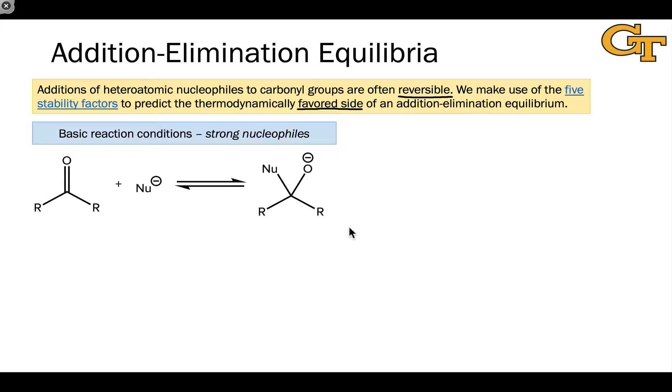Let's start by thinking about nucleophilic addition. Under basic reaction conditions, strong nucleophiles are going to be involved, almost universally anionic nucleophiles. To decide which side of this addition equilibrium is favored, we need to think about the relative stabilities of the anions on each side.